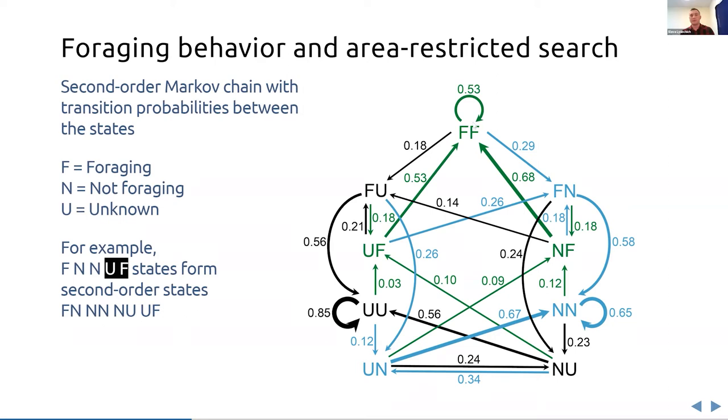For example, here on top, when dolphins were foraging for two minutes, they had the highest probability of 53% to continue foraging, and lower probability to stop foraging, 29%, or to go to the unknown state of 18%.